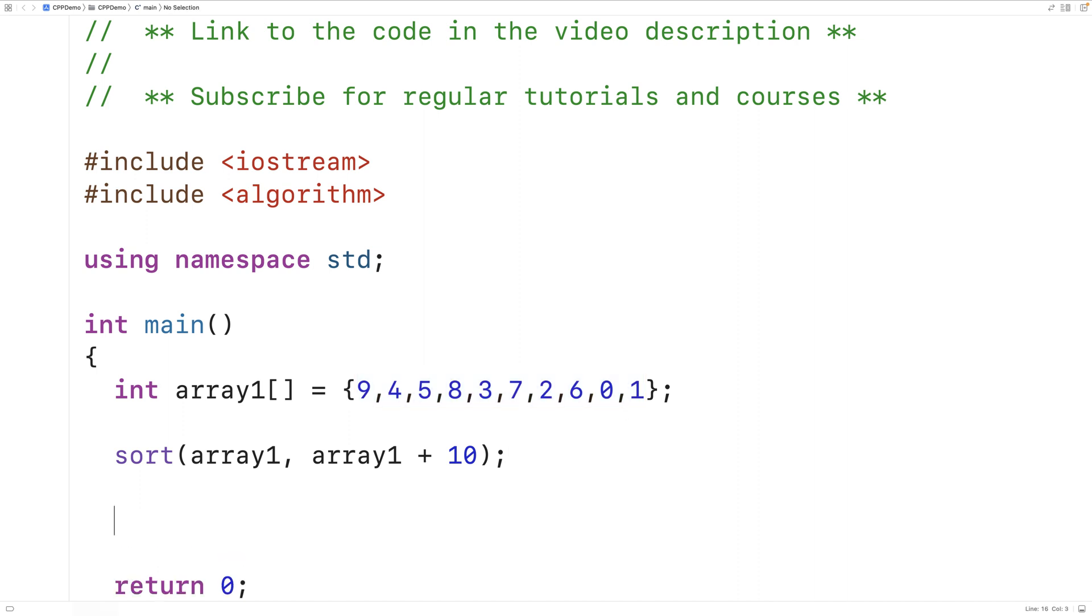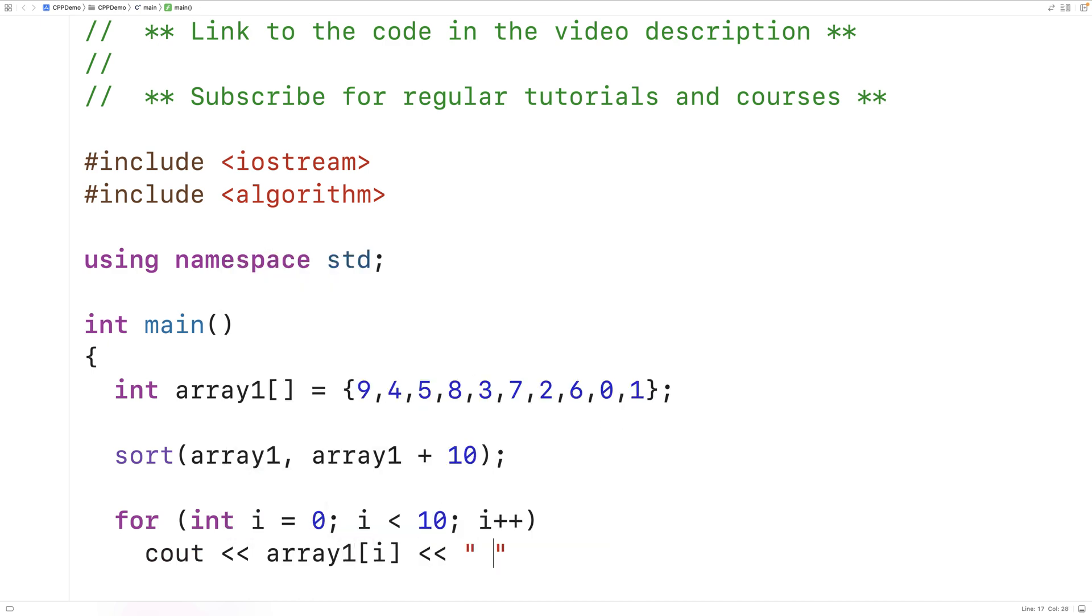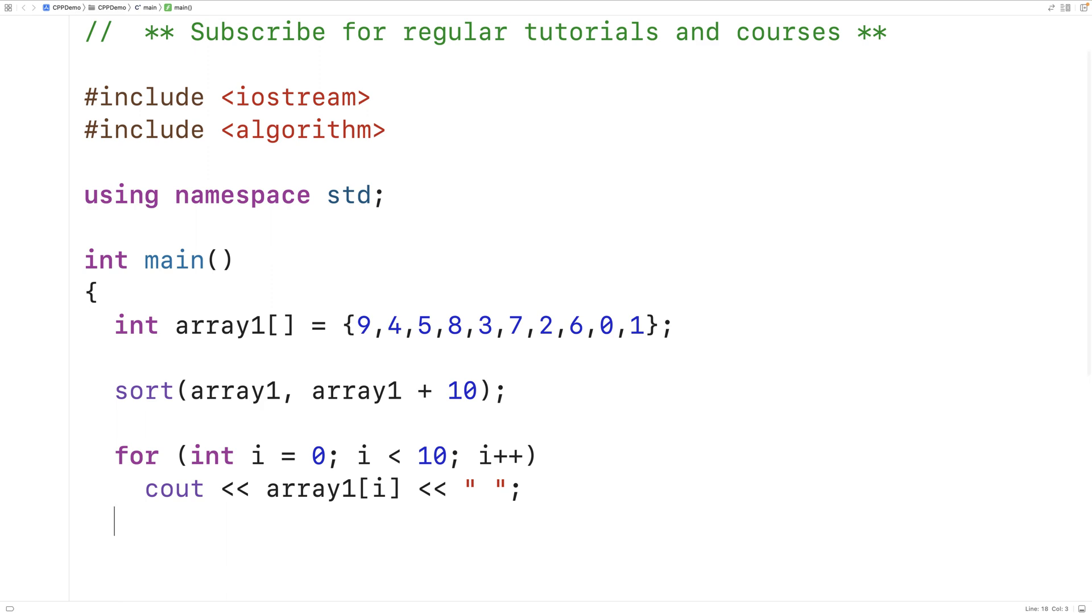Now we could print out the array elements just to check to see if they actually were sorted. So we'll say for int i is equal to 0, i is less than 10, i plus plus. And we use this counter variable in this loop that goes from 0 to 9 to print out each element in the array separated by a space here. And after that's done, we'll also output an end line as well.